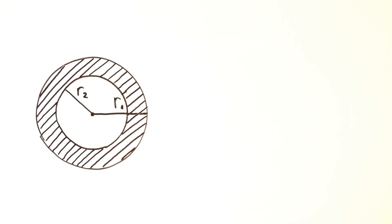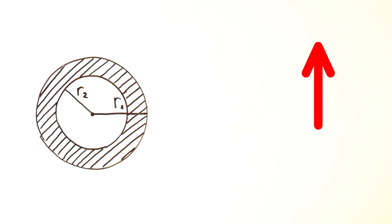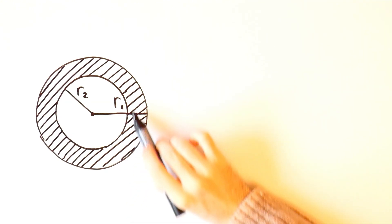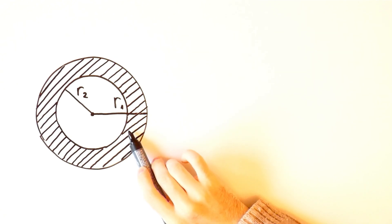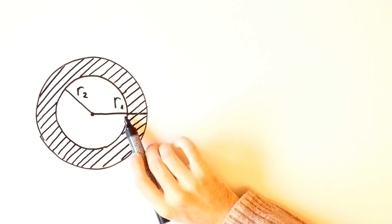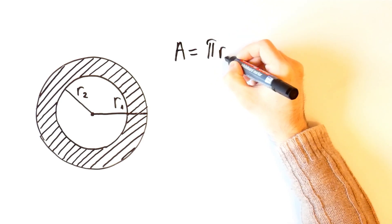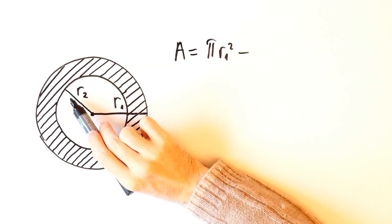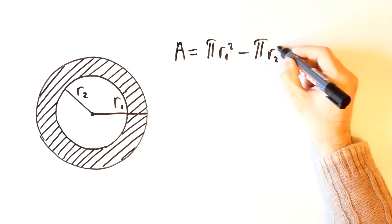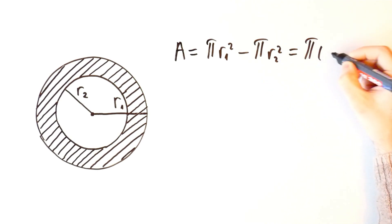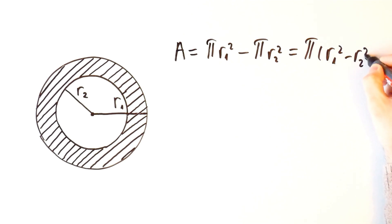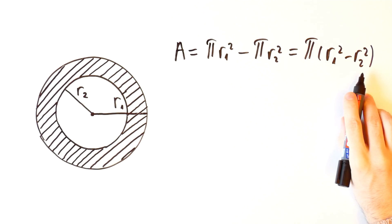To get the area of an annulus, we'll use the formula for the area of a circle from the previous video. Since an annulus is a region between two circles, its area is equal to the area of the outer circle minus the area of the inner circle. So the area of an annulus is equal to π·R1² minus π·R2², which equals π times (R1² minus R2²). This is the formula for the area of an annulus.